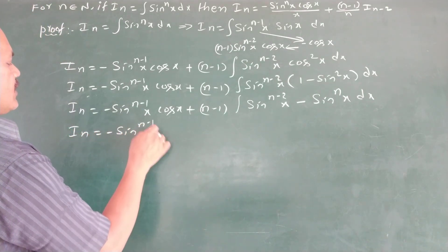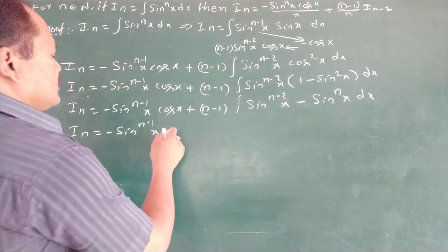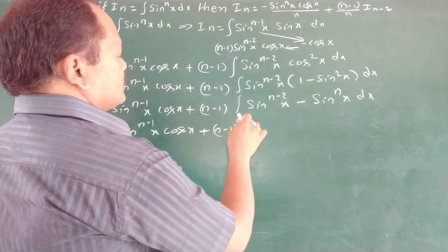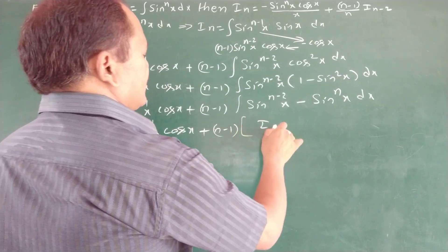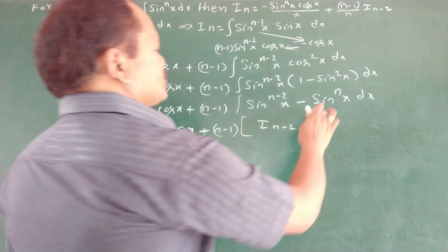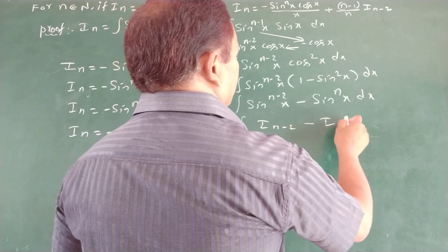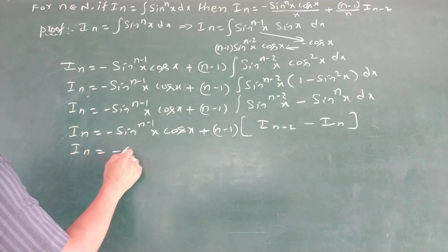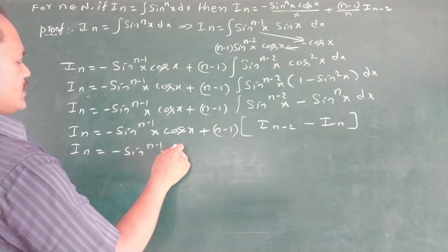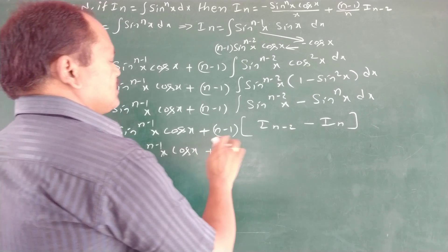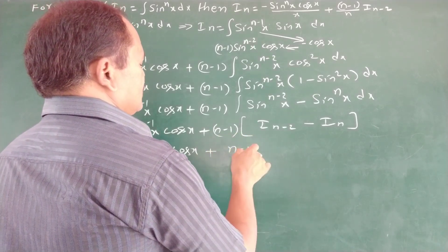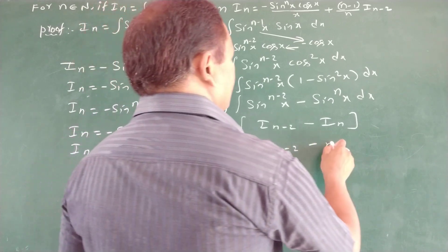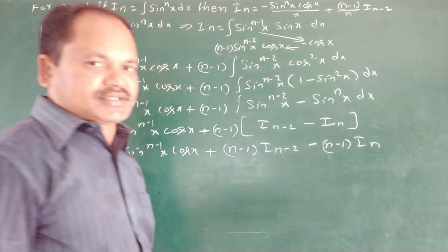So Iₙ equals minus sinⁿ⁻¹x times cos x plus (n minus 1) times [Iₙ₋₂ minus Iₙ]. That is, Iₙ equals minus sinⁿ⁻¹x times cos x plus (n minus 1) times Iₙ₋₂ minus (n minus 1) times Iₙ.